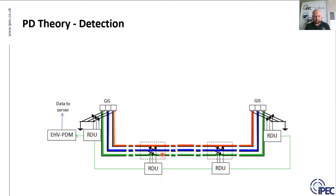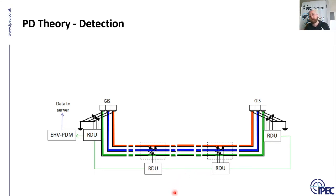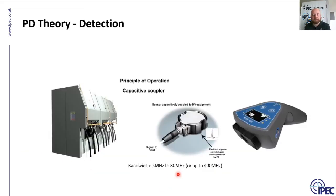These EHV link box environments are not always the most accessible, but we do have solutions for monitoring in them — IP-rated enclosures, fiber optic communication, and underground installation.